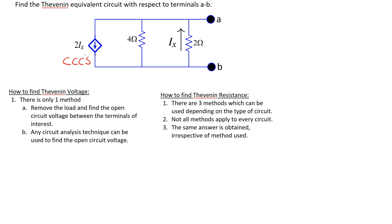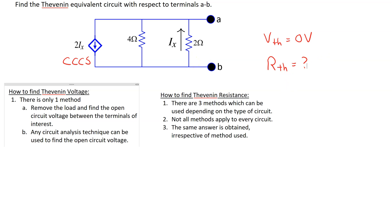When a circuit has dependent sources only, then by definition, V_Thevenin is 0 volts. The process of finding the Thevenin equivalent circuit reduces to just finding the Thevenin resistance. So let us see how we can find R_Thevenin for this given circuit.